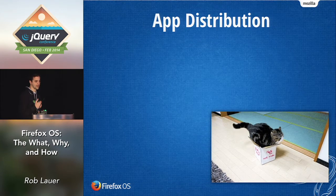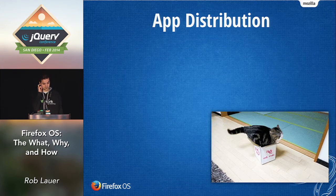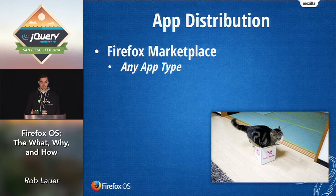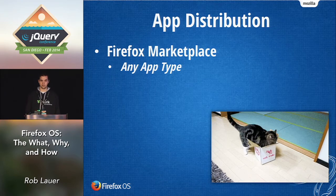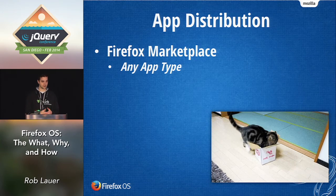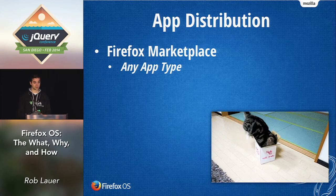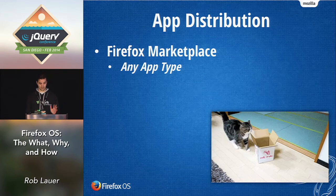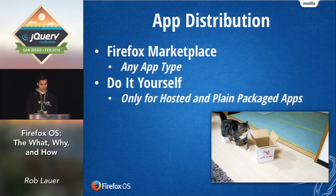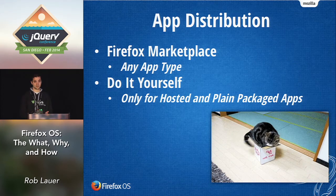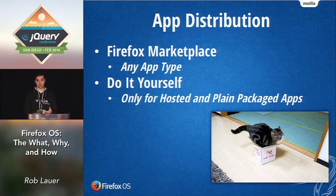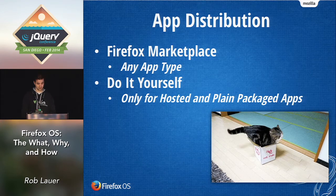The logical next step is app distribution. Mozilla does not look at this as one-size-fits-all — they provide options. Primarily there's the Firefox Marketplace, which most of us will use. It follows the traditional app store model like iOS, Android, and Windows Phone — it gives you marketplace visibility, handles payments, ratings, and categorization, and works with any app type. But you can also roll your own: nothing prevents you from hosting your own app on your web server, taking your own payments, or even creating your own Firefox OS app store.